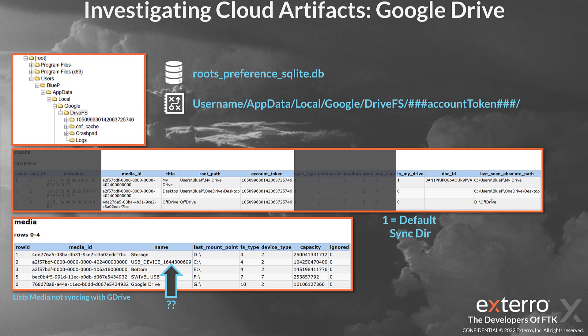The C drive is shown as 'USB device' with some numbers — not entirely clear why it appears that way, as it's actually mounted on an internal SATA on this laptop, so leave a comment if you know. We also have storage as the D drive, bottom as the E drive, and a Swivel USB that was plugged in, but no files were ever synced from Swivel or the bottom drive. You can validate the media IDs on the left against the roots table, and the paths already indicate much of that information. The media table also shows capacity in bytes — divide by 1024 to get down to gigabytes.